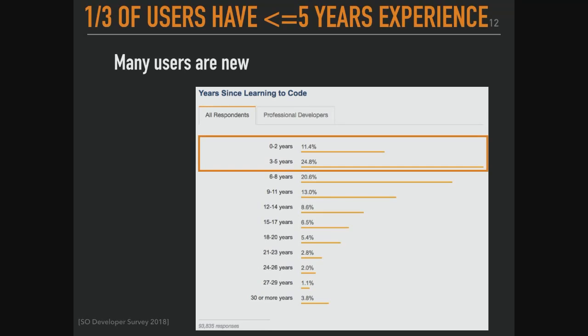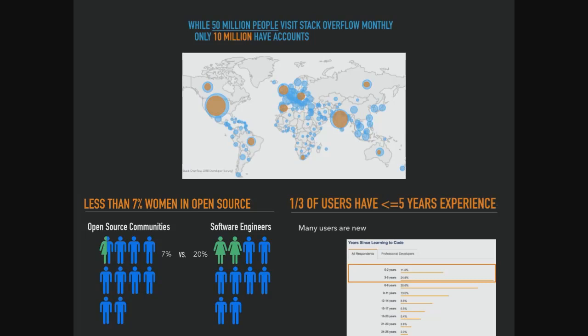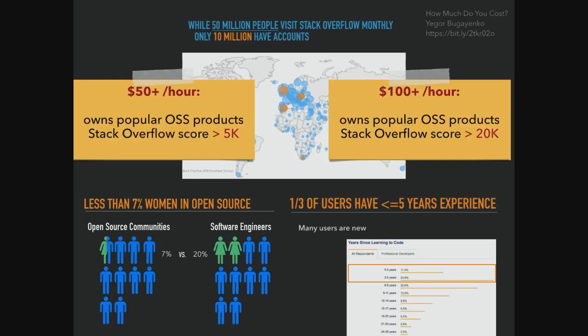A third of the users have less than five years' experience, so there are a lot of people learning to code. From the Stack Overflow developer survey, a large percentage of people are learning. There's also an economic opportunity that some people may be missing out on. On Stack Overflow, you can be considered for positions paying $50 to $100 an hour based on having more than 5,000 to 20,000 points, or contributing to open source projects online.